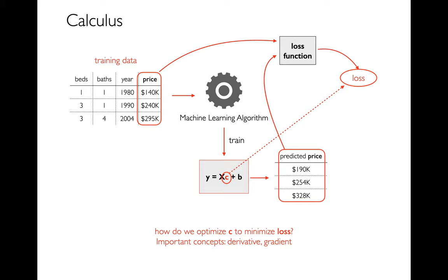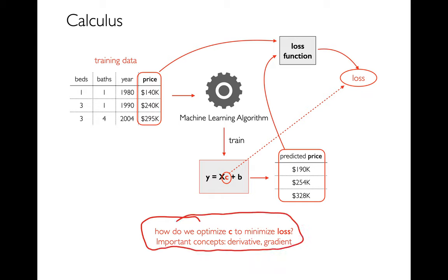I want you to think about how the coefficients in my formula affect my loss. If I change the coefficients I get different predictions, and so my predictions relative to the actual values will be different — I'll have a different mistake. So there's a relationship between the coefficients I choose and the loss I end up with. I can formulate this as: how do I optimize C in order to minimize the loss? That is exactly the kind of problem that calculus is good at — calculus is good at figuring out how to minimize or maximize functions, and in this case my function is this loss function.